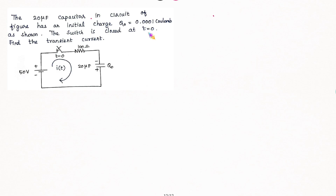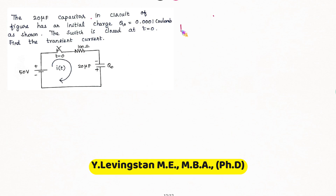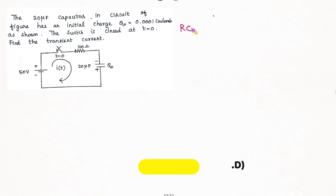Welcome to LSEE YouTube channel. This is Livingston here. In this video, we have a problem with our RC transient topic. We have a 20uF capacitor in the circuit with an initial charge Q0 equal to 0.0001 C.